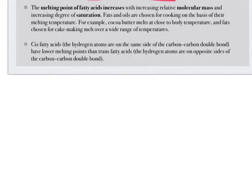Notice what these are chosen for then. Typically, fats and oils are chosen for cooking on the basis of their melting temperature. We want our fats and oils to melt easily so they can cook our food. If they have a really high melting point and they stay a solid, that's not going to be very good if we're trying to cook our food because we're going to burn our food before our butter or margarine melts and is able to cook our food. Notice, for example, cocoa butter melts close to body temperature, so nice, low melting temperature.